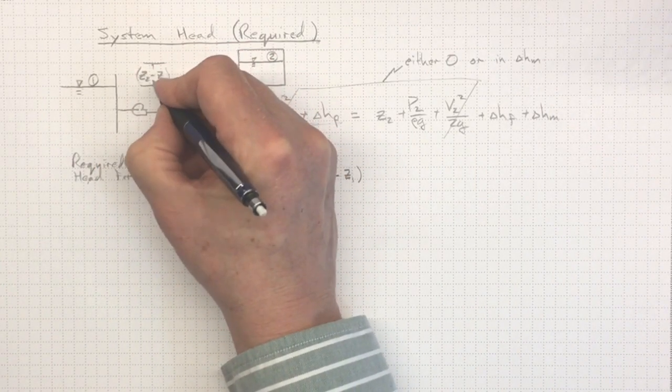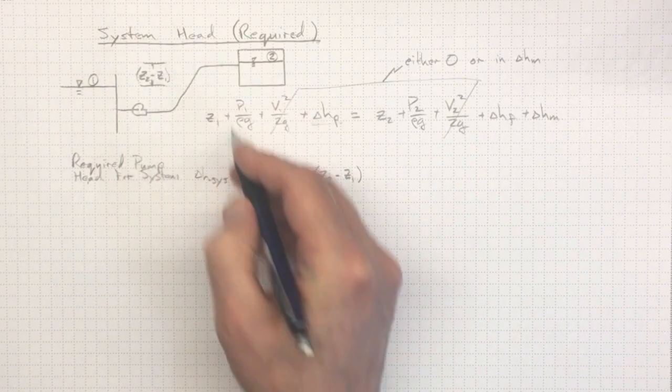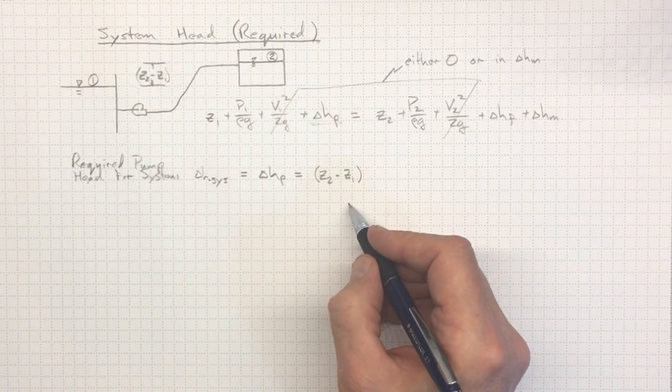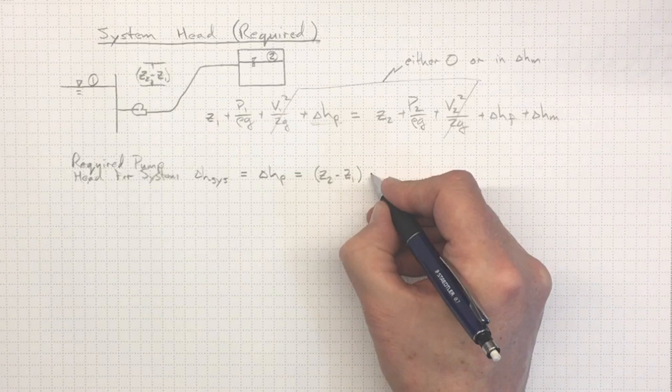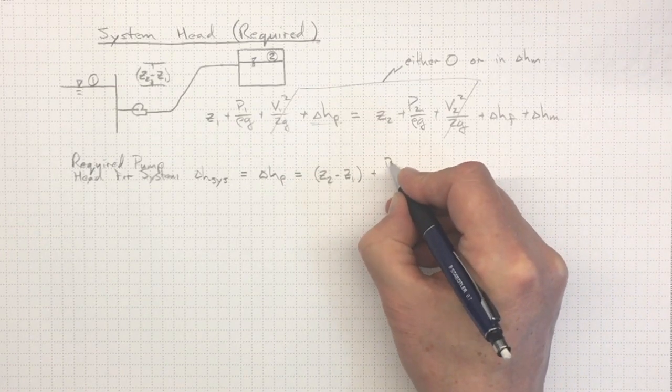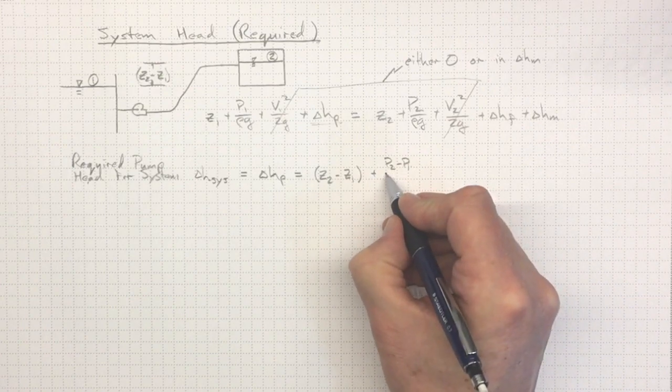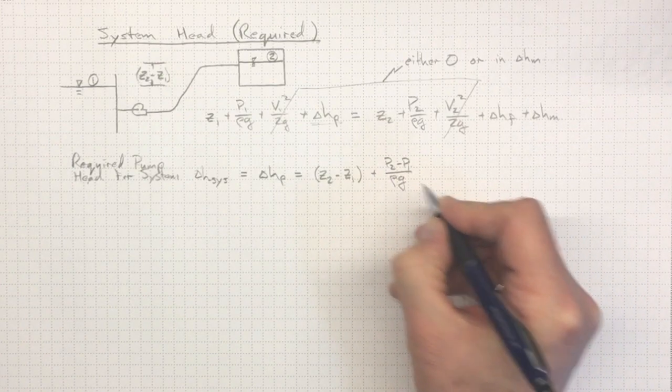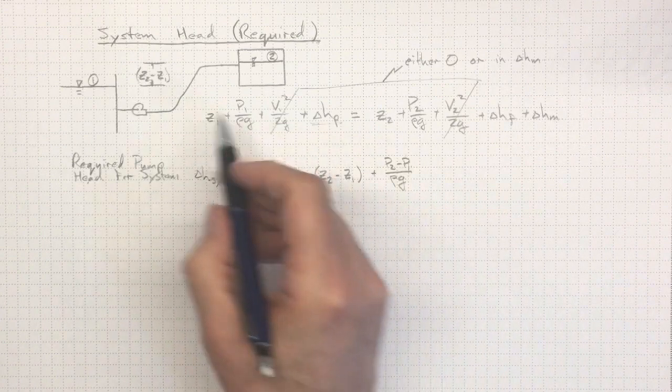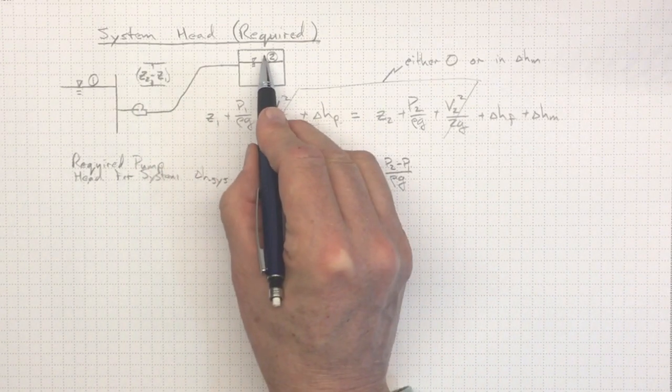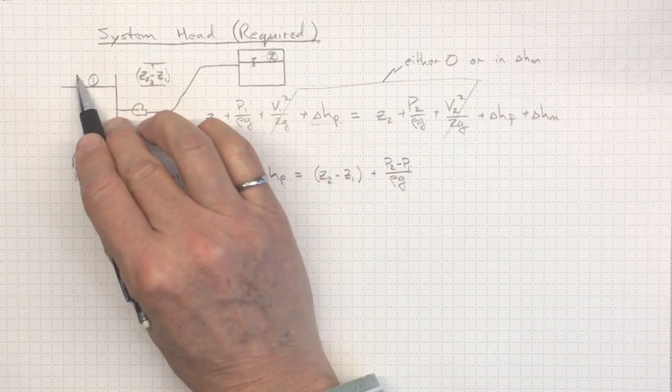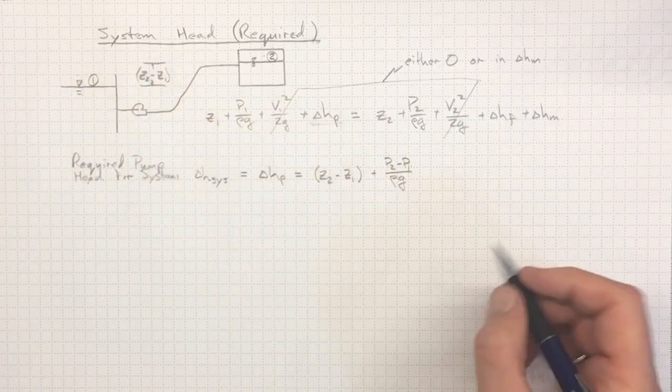We need to have enough increase in head across the pump to overcome that elevation difference. Likewise, if there's a pressure difference, we'll need to have P2 minus P1, if there's a higher pressure at P2, divided by rho G, increase in head to overcome the pressure difference if the pressure is higher in this tank than it was over here at atmosphere.